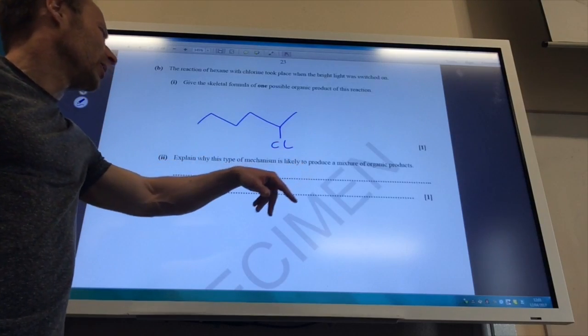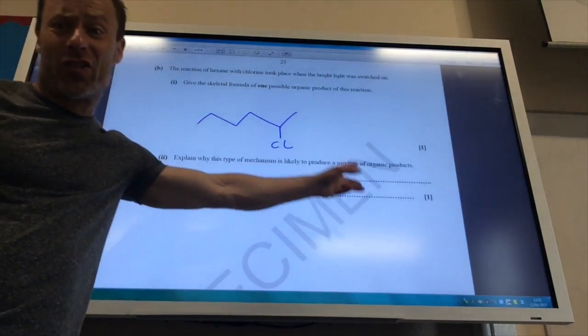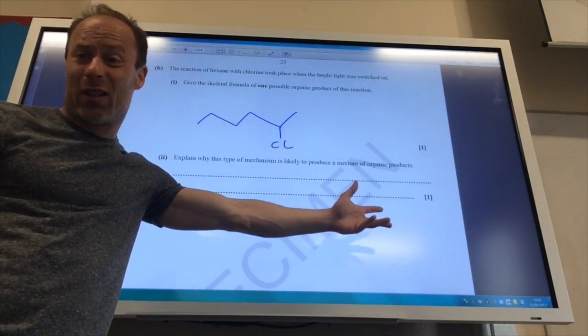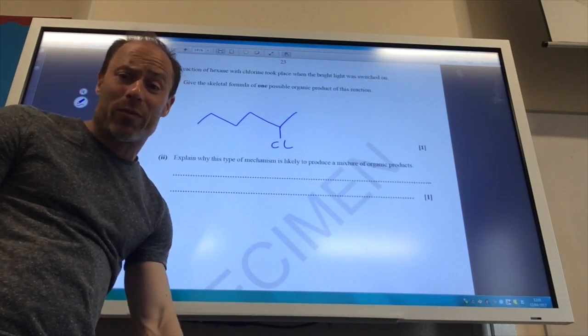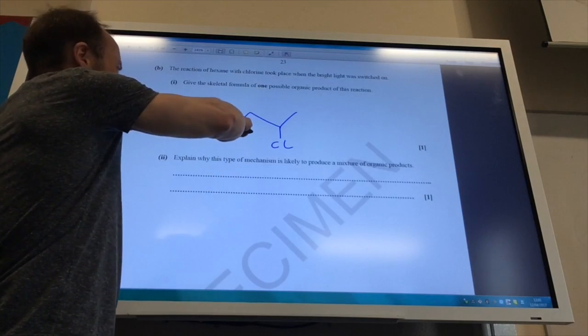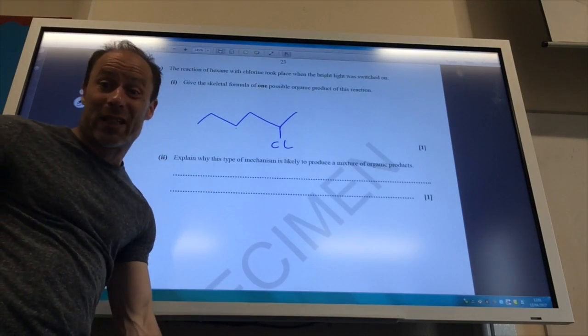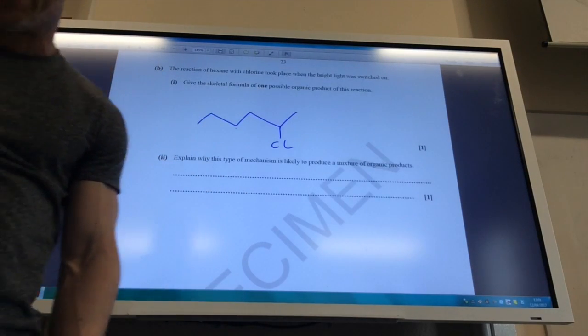Why does this give a mixture of products? Well, it's because any hydrogen atom could be replaced by chlorine. There's no control for this. You can also get di-substituted products. So you may have another chlorine add across, tri-substituted products, a whole mess of things you get.